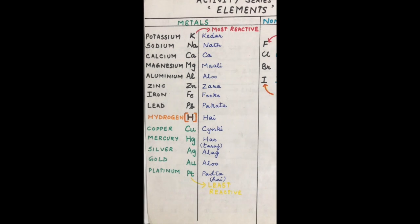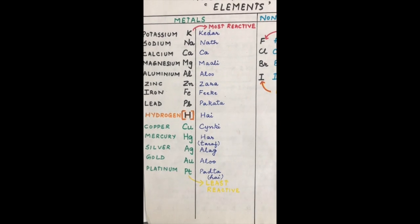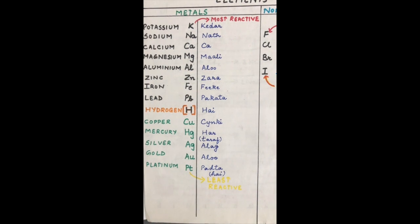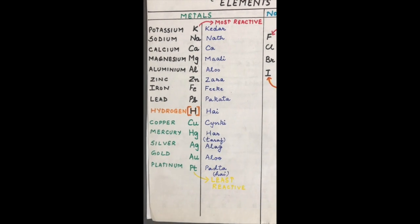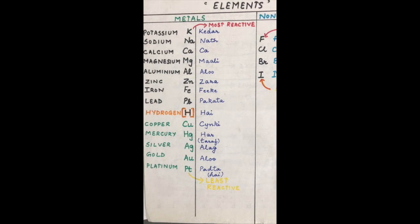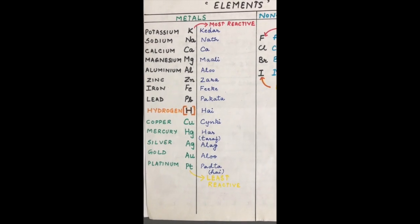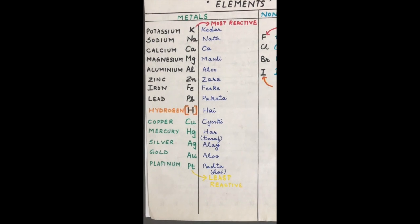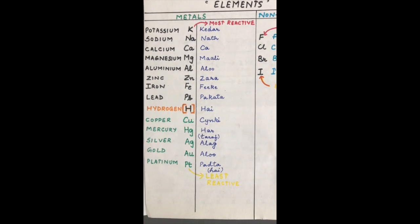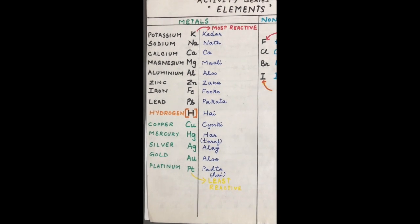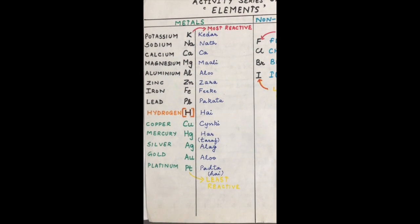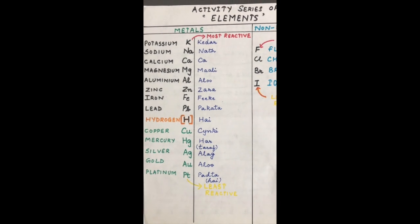The activity series of metals can be learned using a mnemonic: 'Kedar Nath Ka Mali Alu Zara Fi Ke Pakata Hai Kyunki Har Taraf Alag Alu Padhta Hai.' This is a way that you can learn the activity series, ending with Pt for platinum.